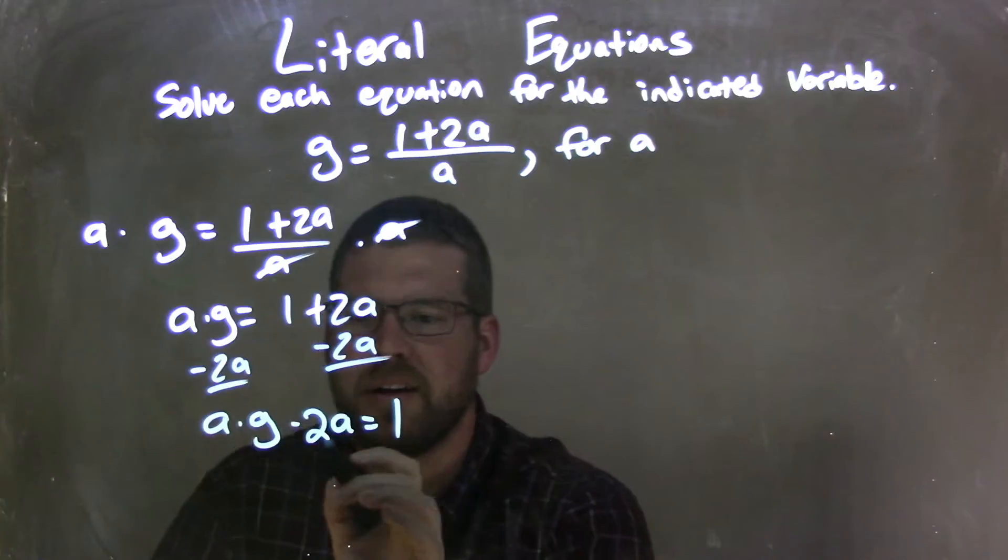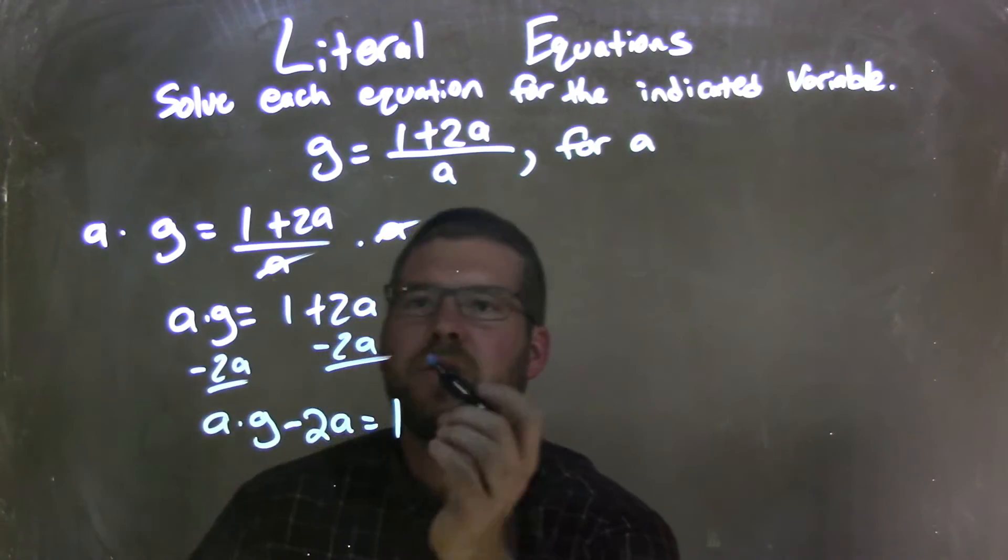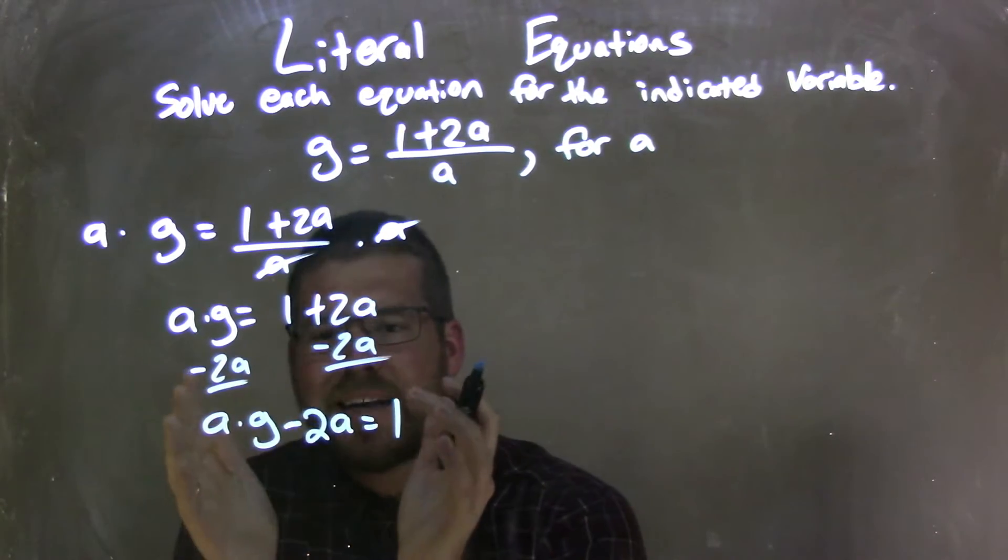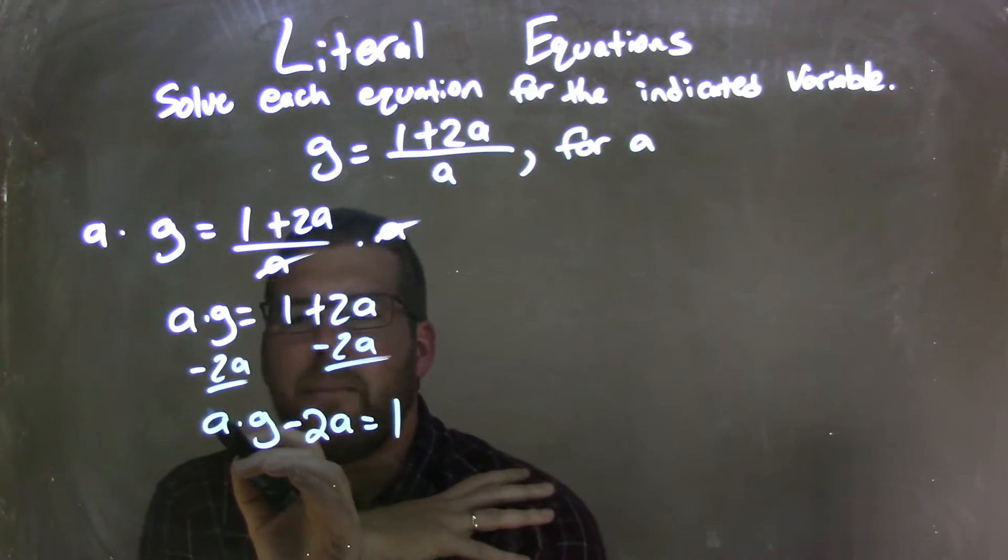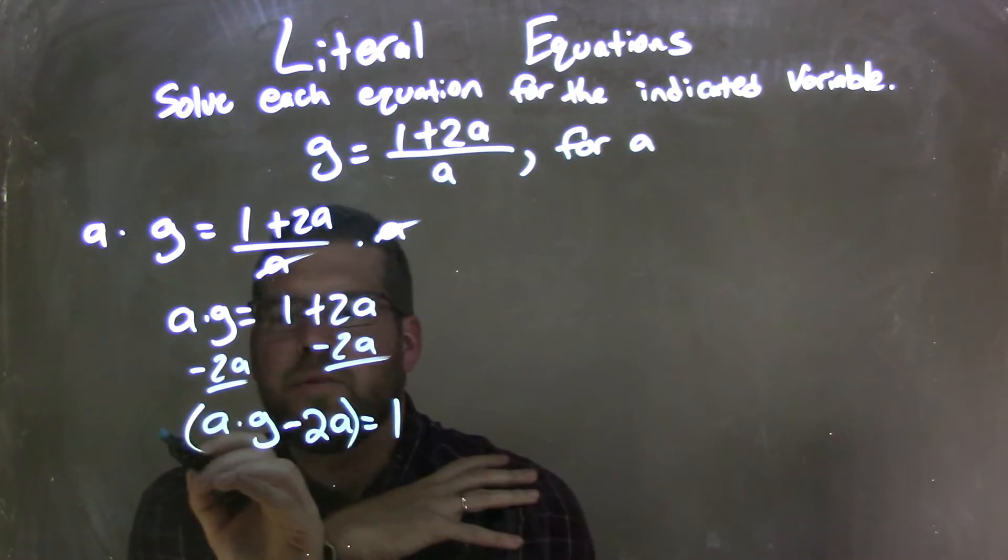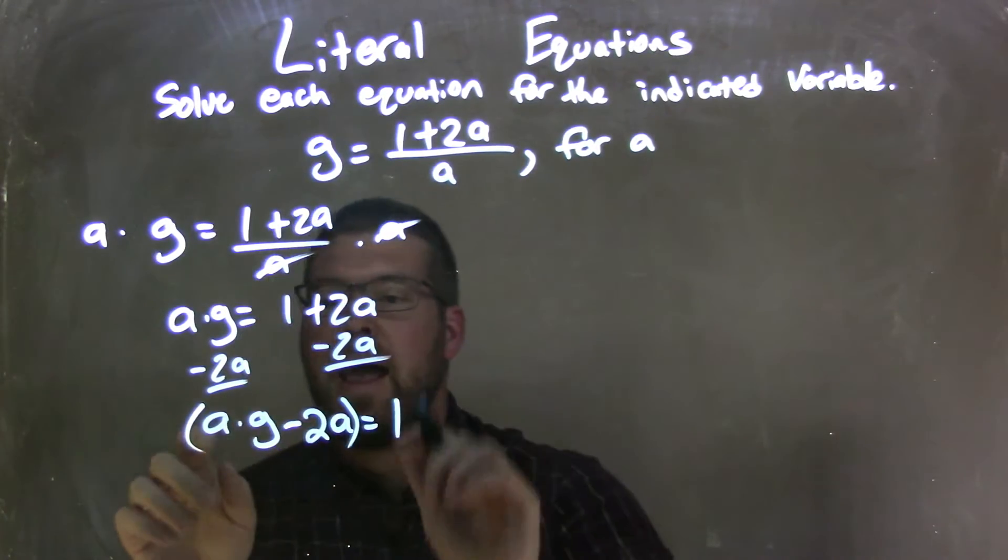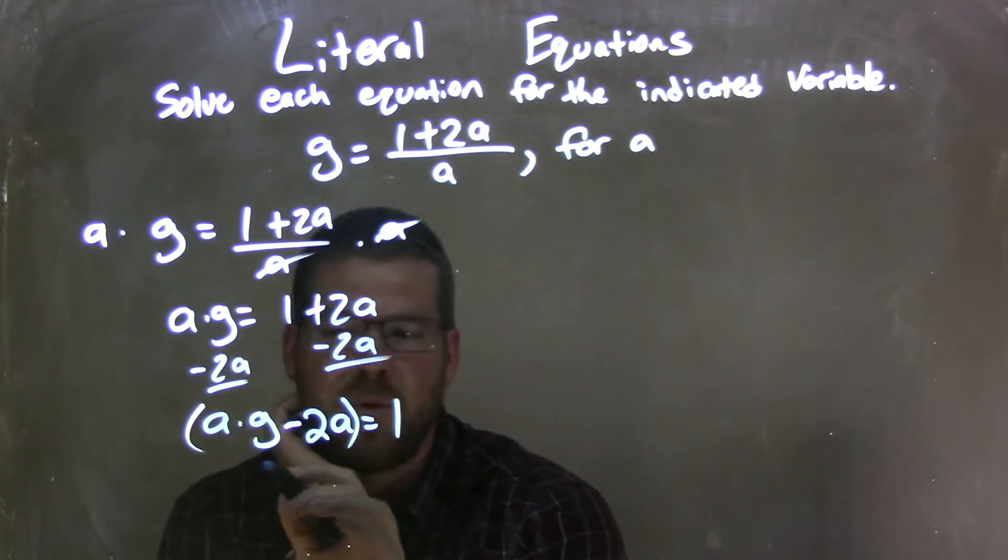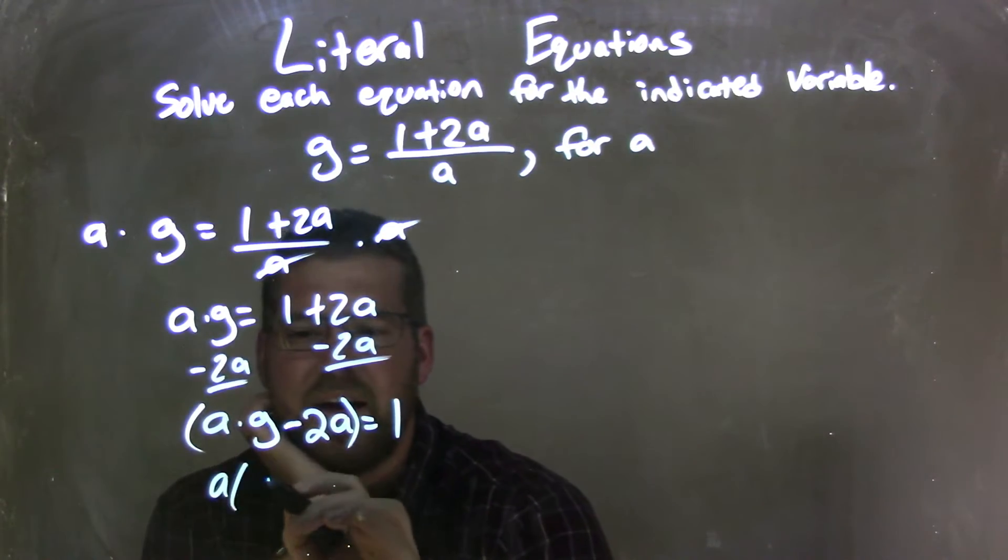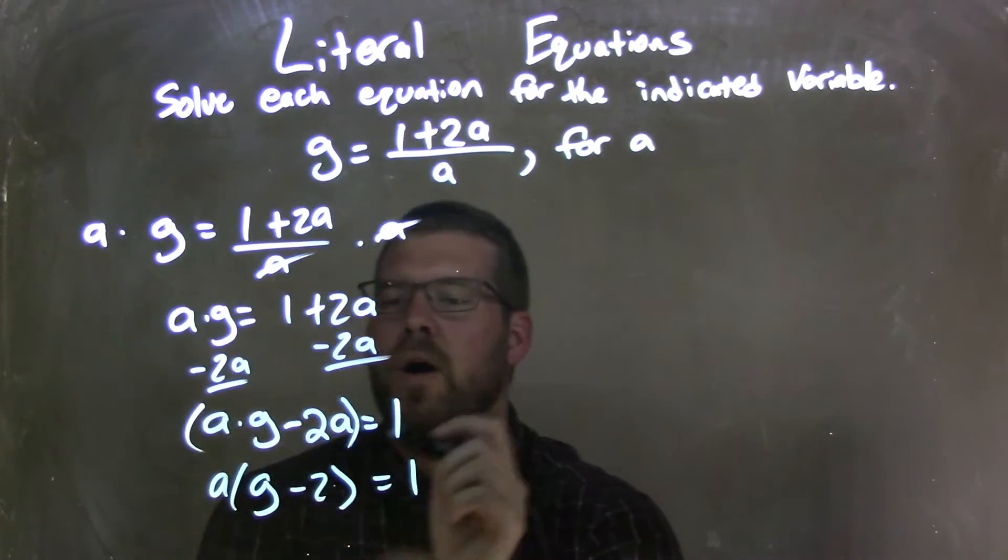I'm kind of sliding over a little here. So what I need to do now is, since I need to get a by itself isolated, I'm going to pull out an a here. So I'm going to pull out an a, and so I'm going to put parentheses around it and pull it out. So my next step, I have an a out here, I have a g minus 2, and that's going to equal my 1.